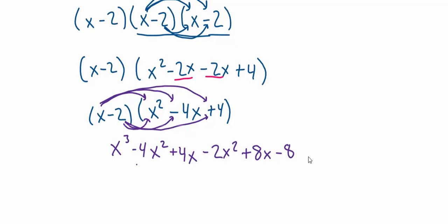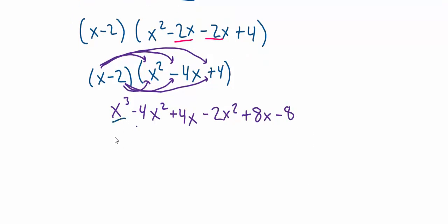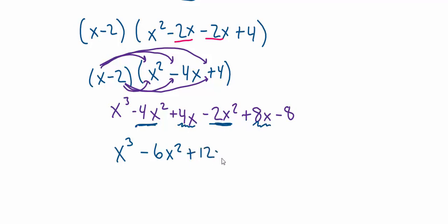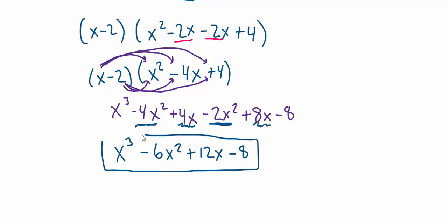Now there's going to be a lot of like terms to combine. The x cubed is the only x cubed in the entire answer, so I leave it. However, we do have minus 4x squared and minus 2x squared — a negative 4 and a negative 2 make negative 6x squared. Then we have 4x plus 8x, which gives 12x. And the minus 8 is the only constant in the problem, so I copy subtract 8. I'm going to say that is my final answer because I cannot combine any like terms. Anyway, that was a lot of multiplication. I hope you learned something from it and I wish you the best of luck.